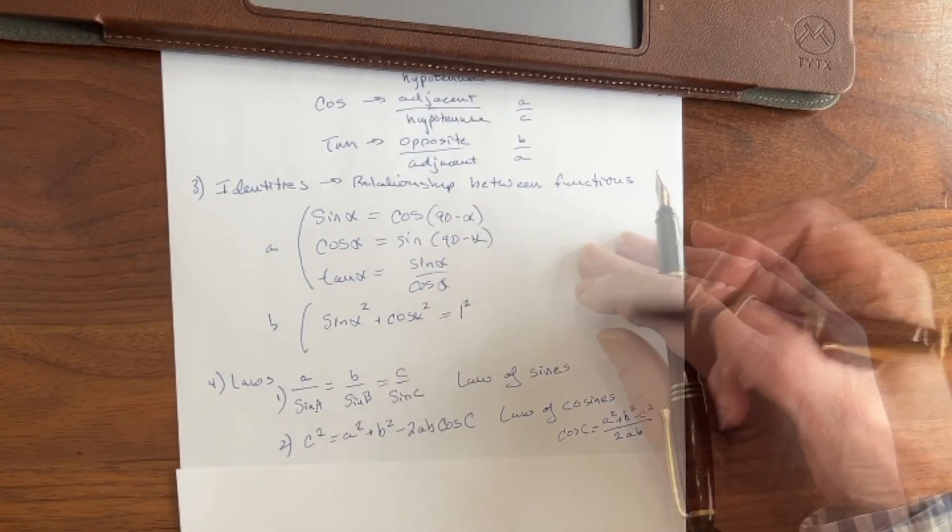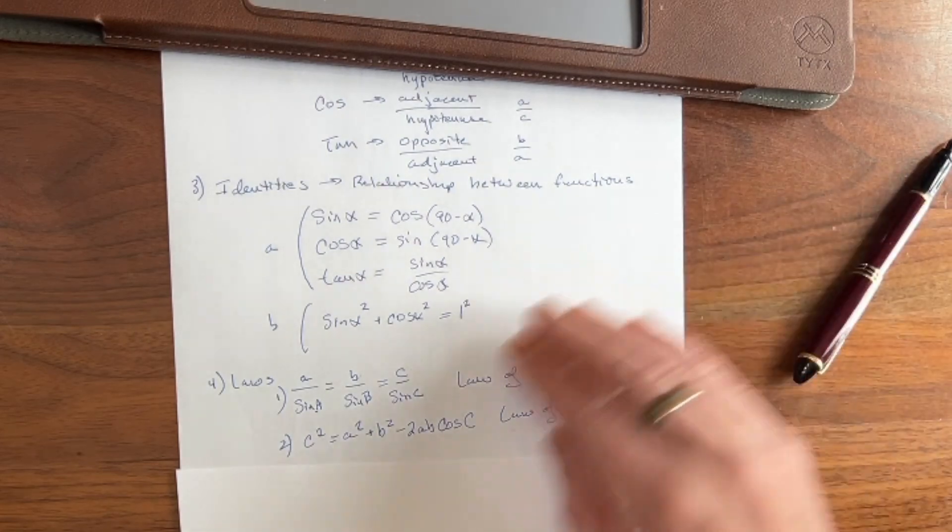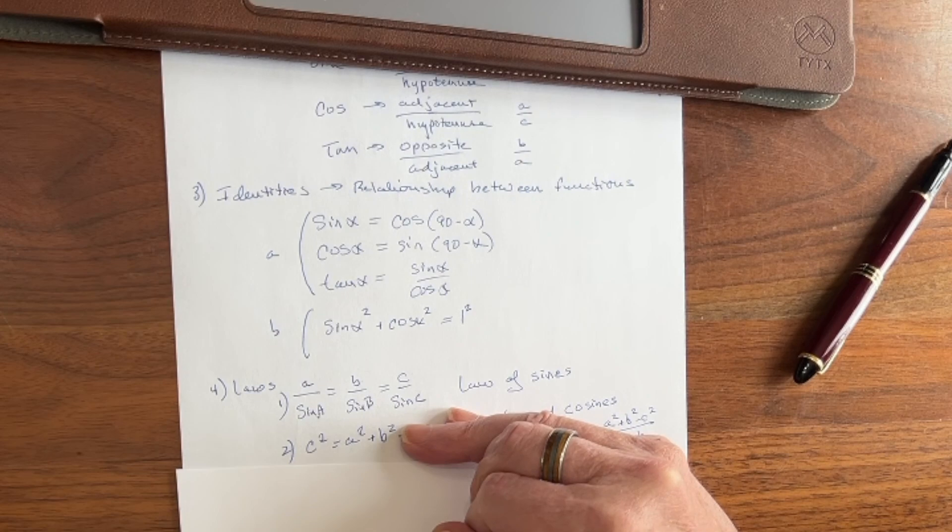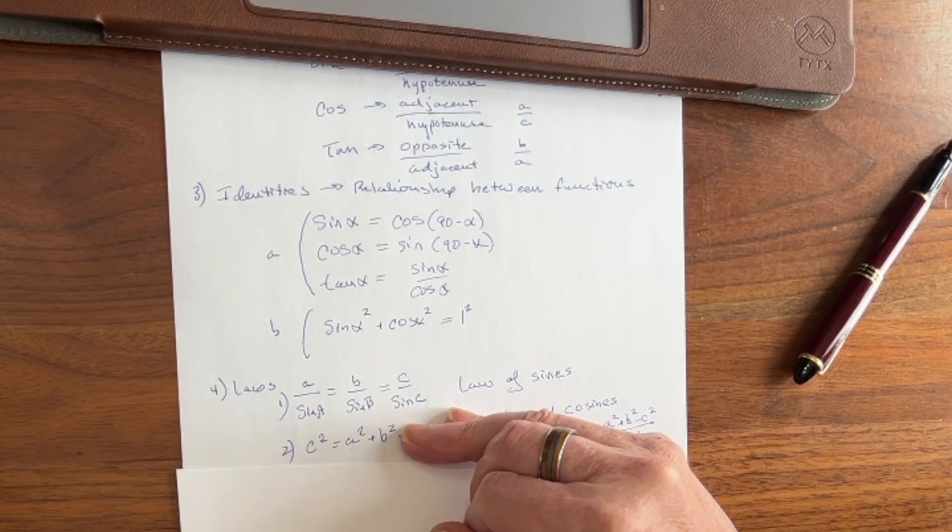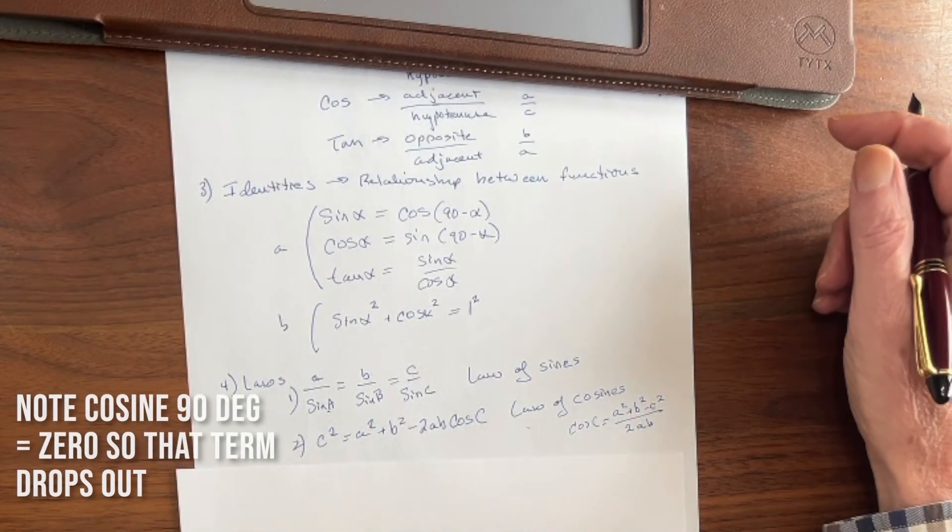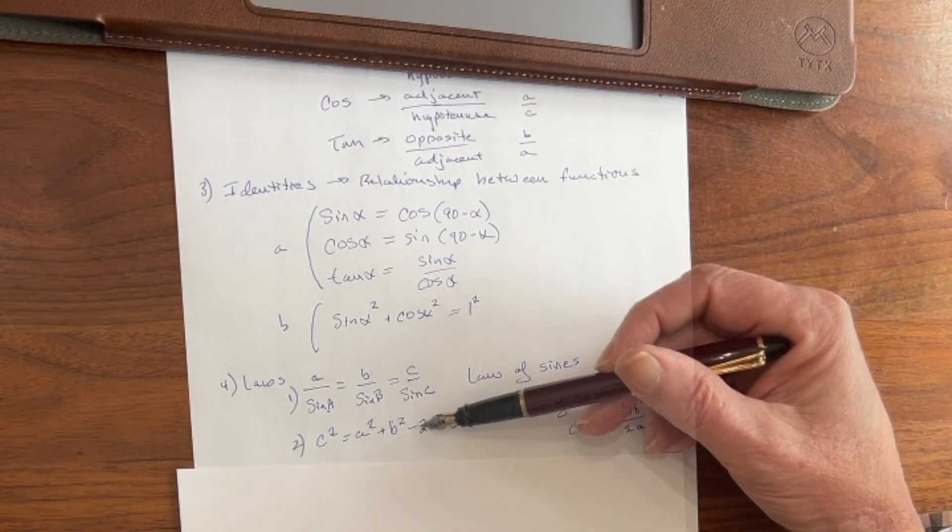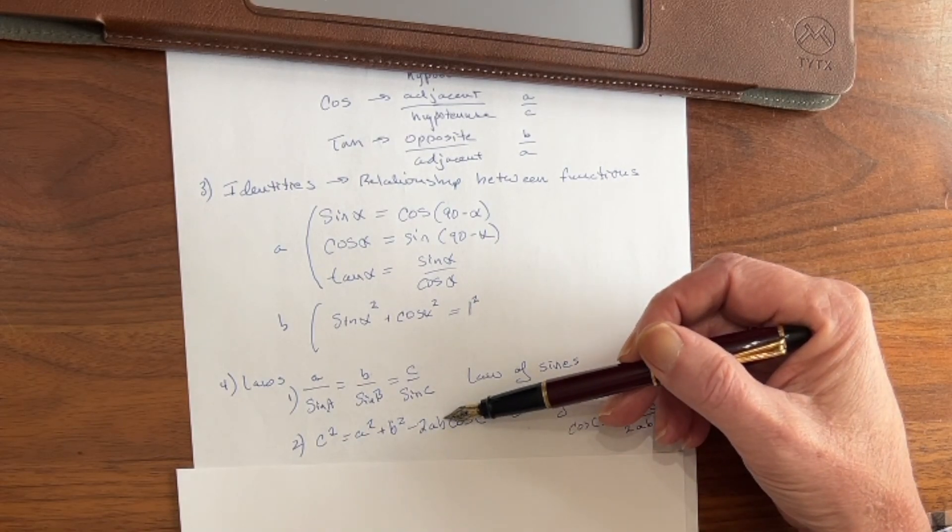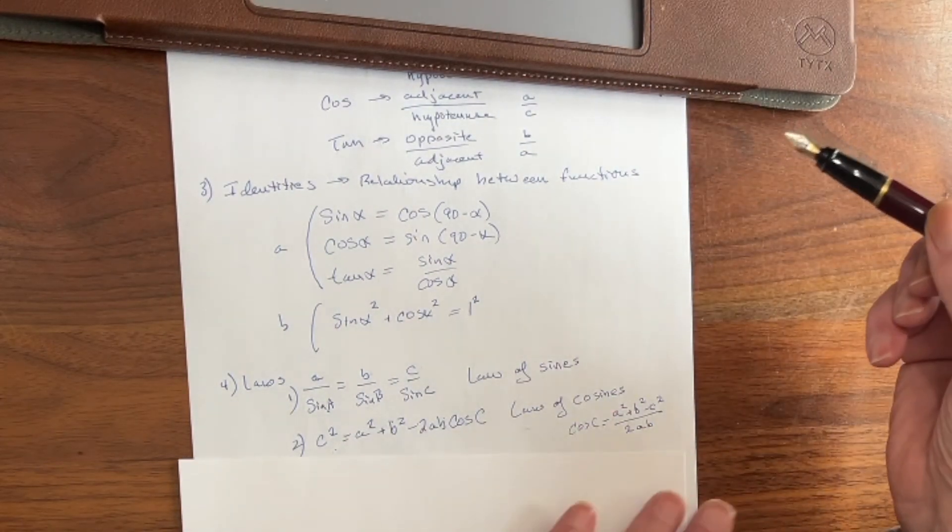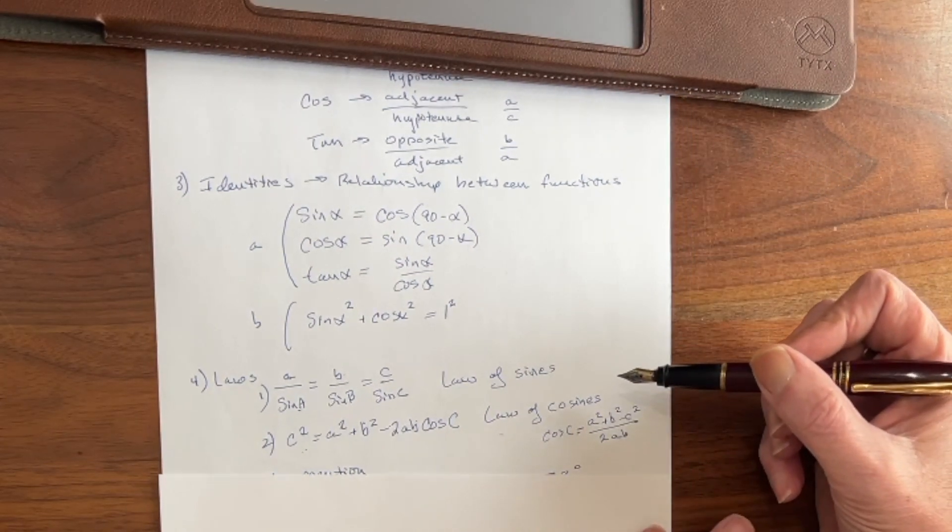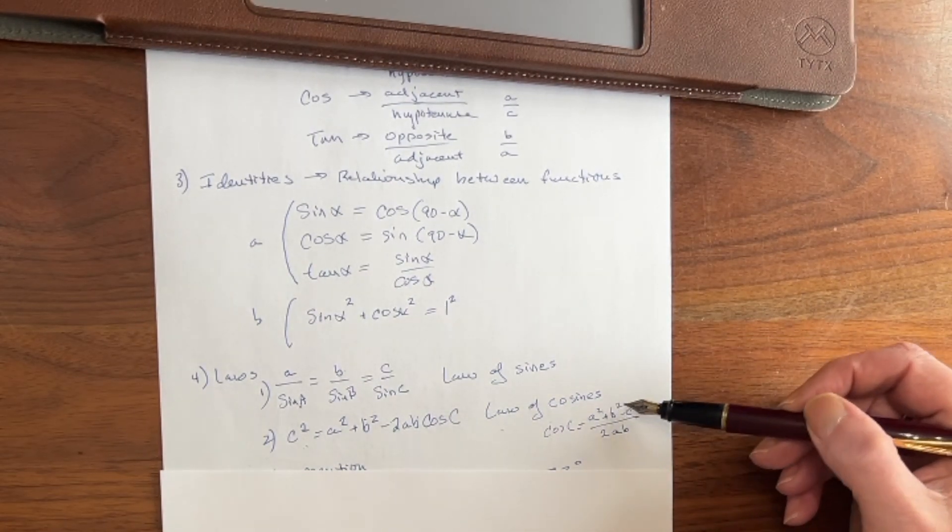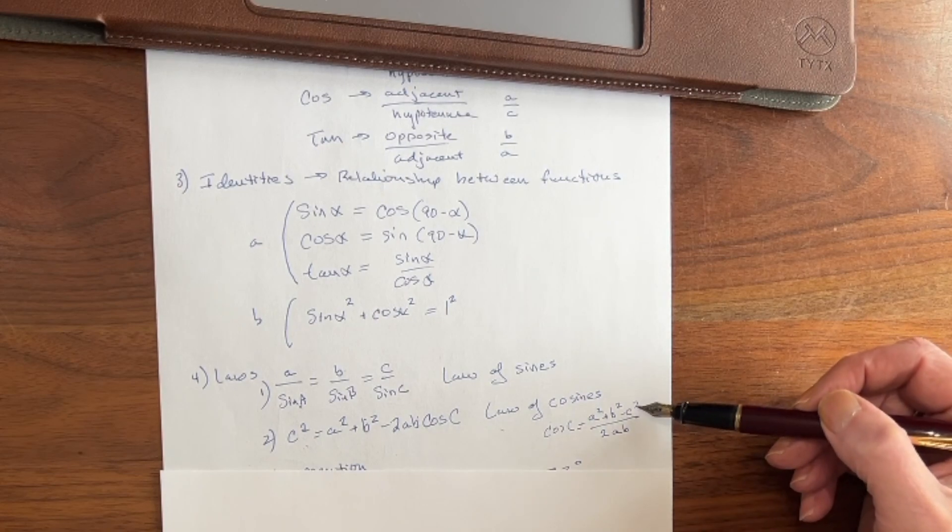Now the law of cosines, which is what we're going to do next, should be pretty familiar to you because if you go right here, you have the Pythagorean formula: c squared equals a squared plus b squared. Well, what if it's not a right triangle? You need to put a little correction in, and that is minus two times a b cosine c, minus two times both sides multiplied together times the cosine of the angle that's opposite the side you're looking for. Another way that you may see it written sometimes, and a way I like to write it quite a bit, is that cosine c equals a squared plus b squared minus c squared over two a b.